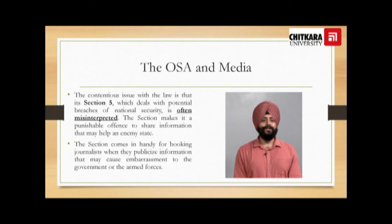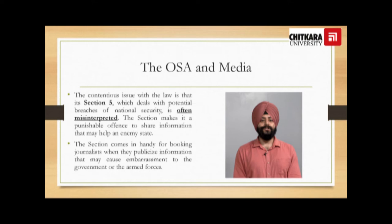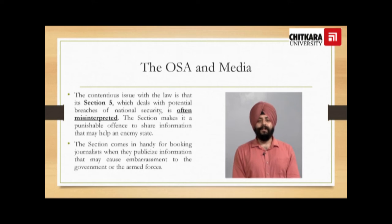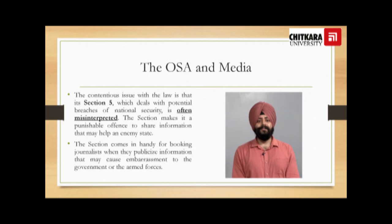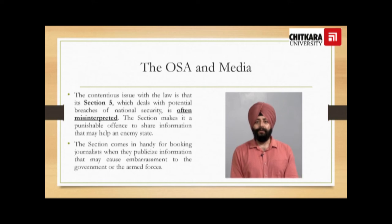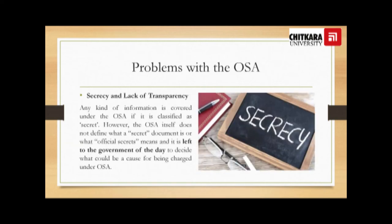The contentious issue with the law is that its Section 5, which deals with potential breaches of national security, is often misinterpreted. The section makes it a punishable offence to share information that may help an enemy state. The section comes in handy for booking journalists when they publicize information that may cause embarrassment to the government or the armed forces. Problems with the OSA arise from secrecy and lack of transparency.